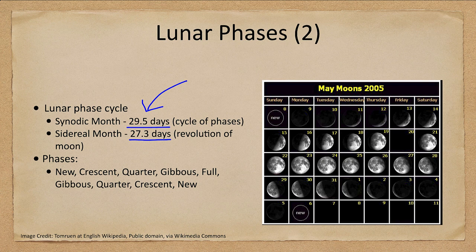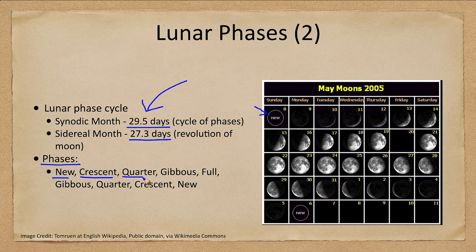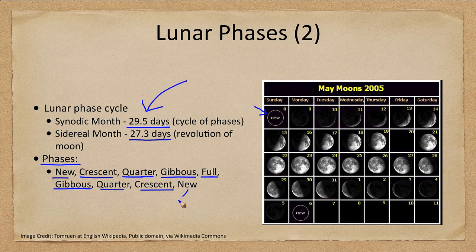The phase names: we have the new phase when the moon is not visible — we see nothing because the illuminated portion is pointing away from us. Then we see a crescent phase, up to a quarter phase where half of the visible surface is illuminated. The gibbous phase is more than half, and the full phase is fully illuminated. Then we begin through the waning phases: gibbous, quarter, crescent, and back to new again, and the cycle starts all over.